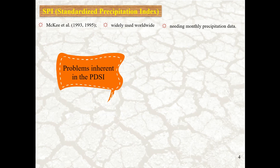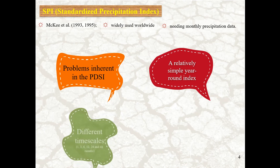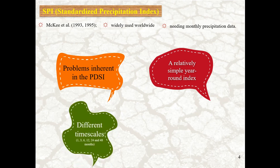When McKay started to innovate this index, it was developed to address some of the problems inherent in the PDSI. McKay designed this index to be a relatively simple year-round index, and the SPI is flexible and can be calculated for different timescales for monitoring drought.